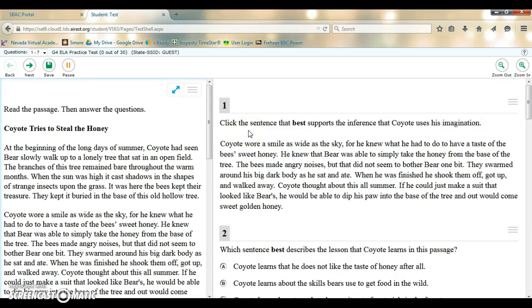The first question asks you to click the sentence that best supports the inference that Coyote uses his imagination. You will do exactly that. You will read through this paragraph, decide which sentence answers the question, you'll click on that sentence, you can see it's highlighted in green as my answer selection.